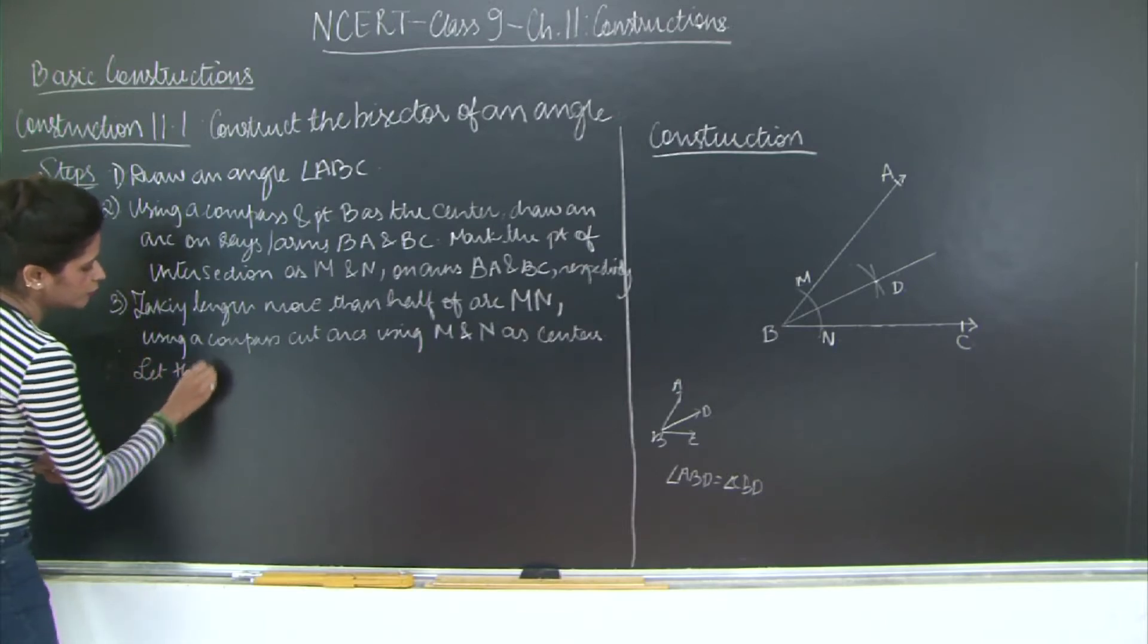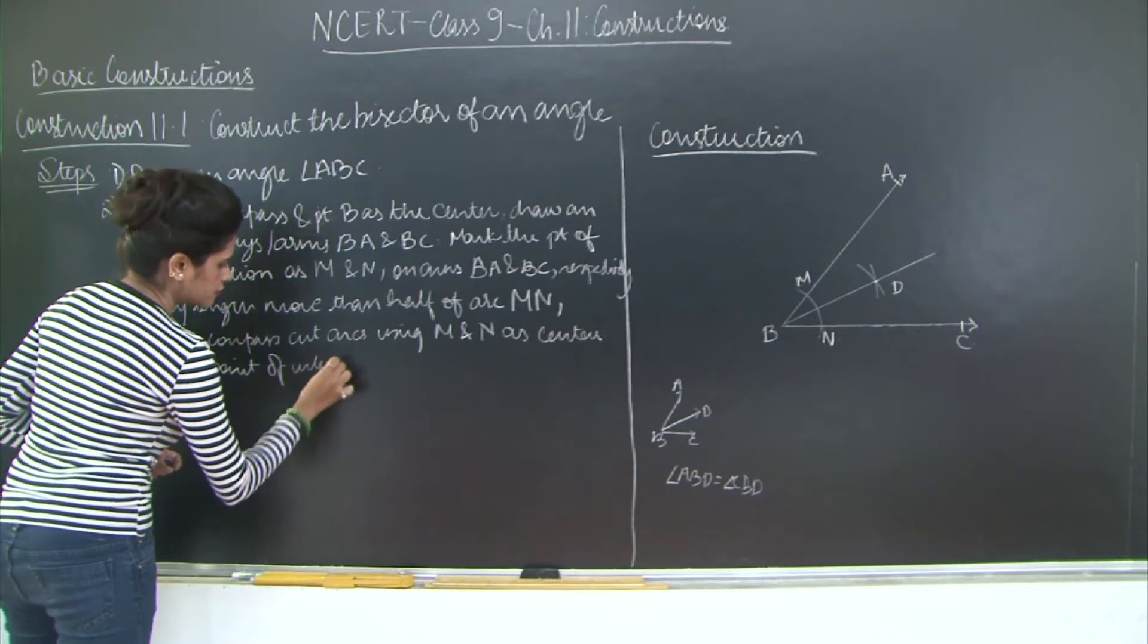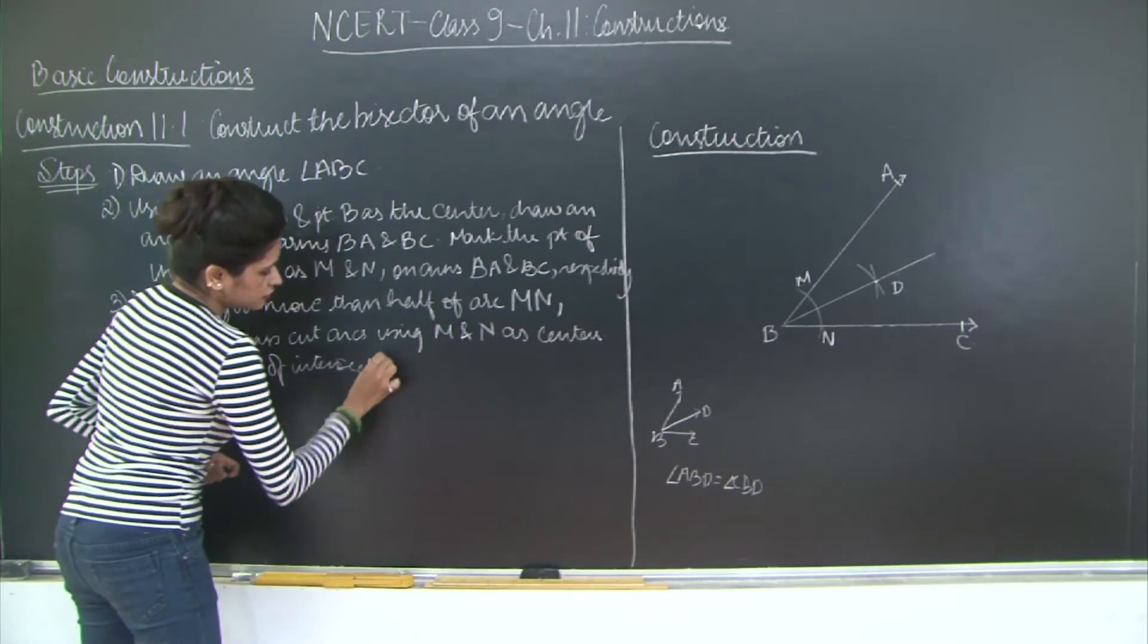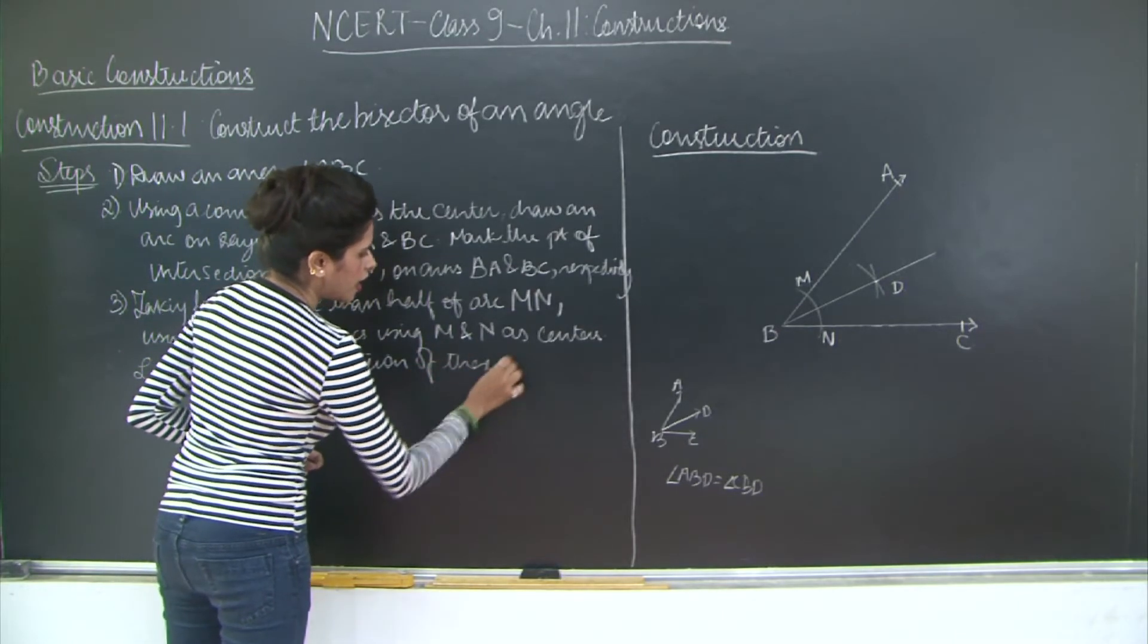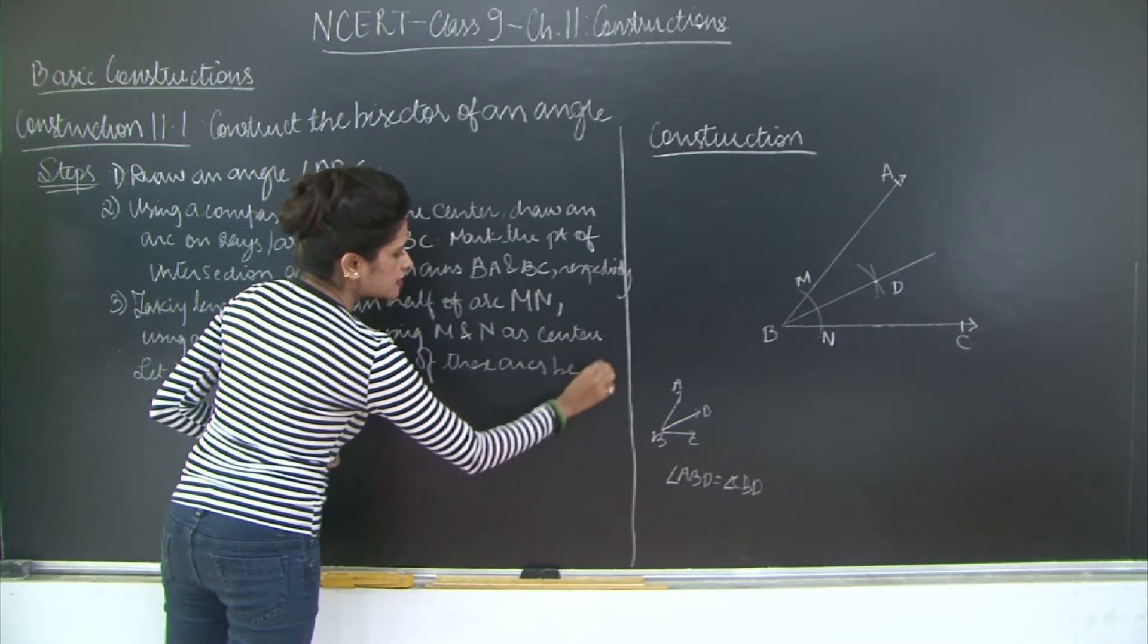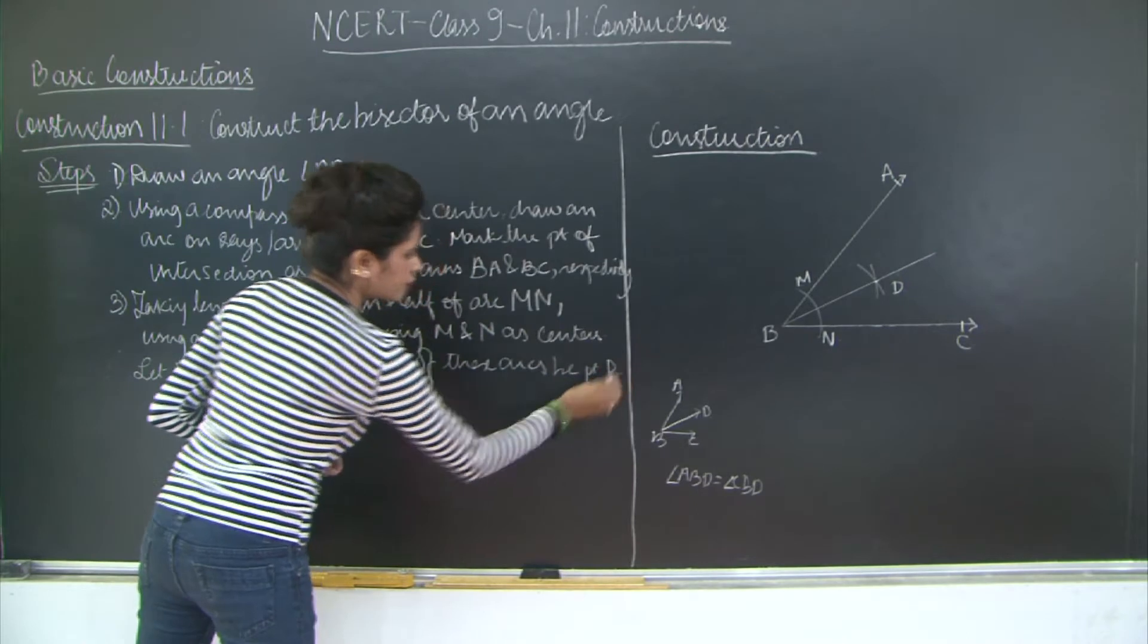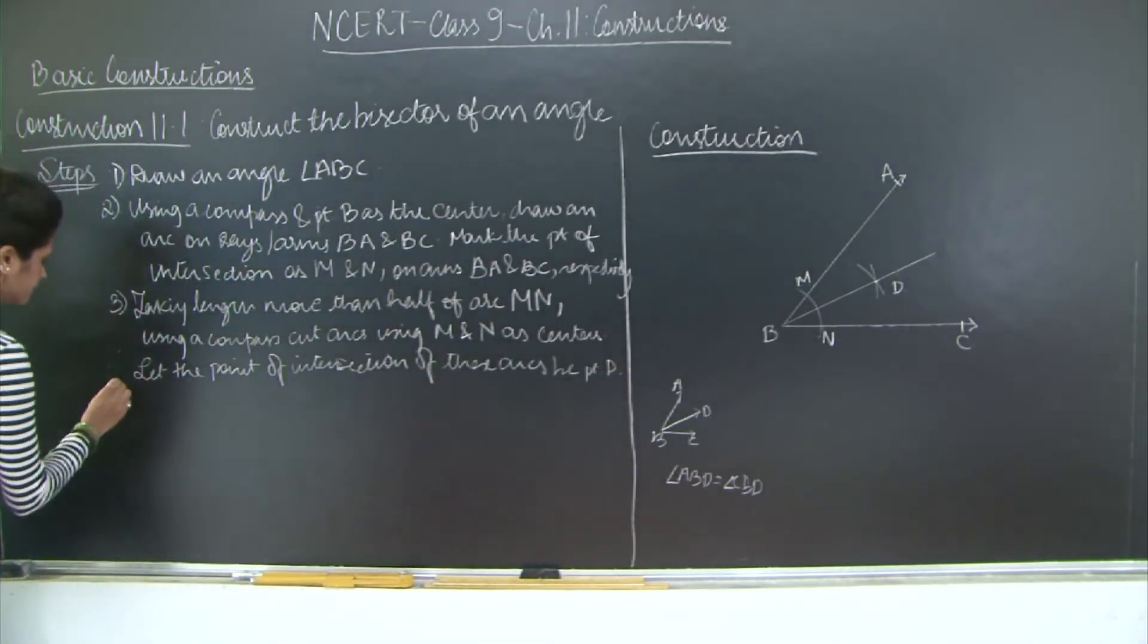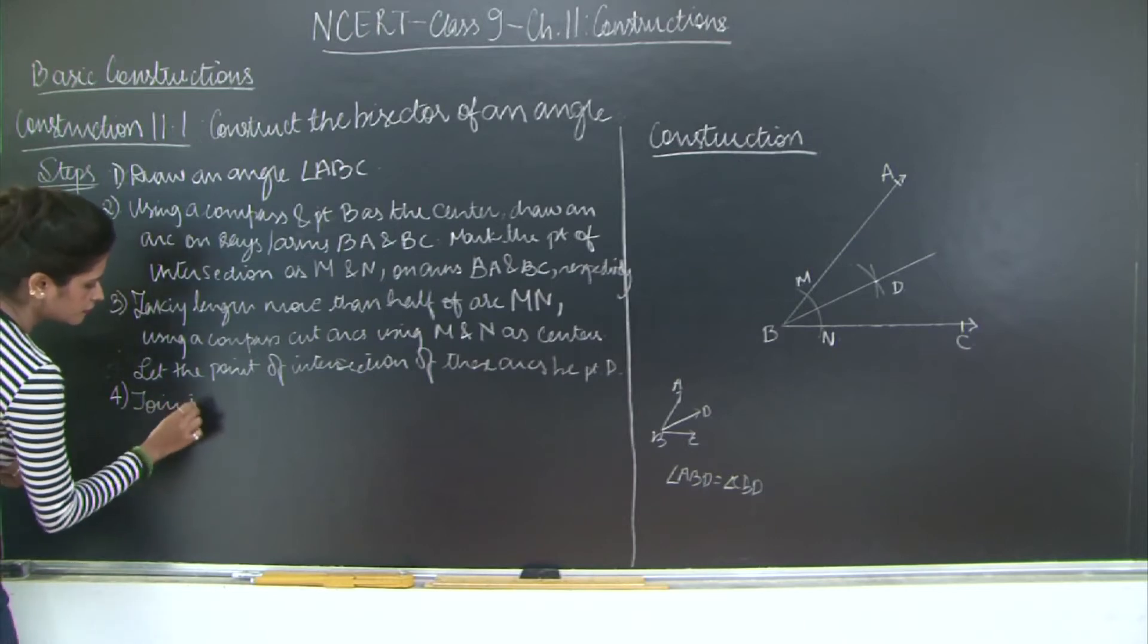Let the point of intersection of these arcs be point D.